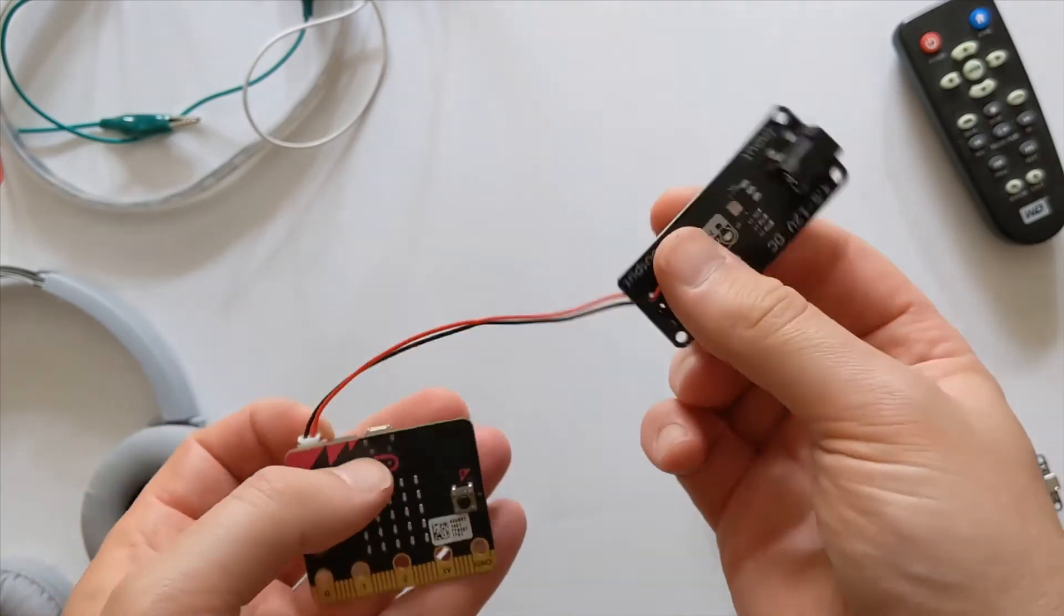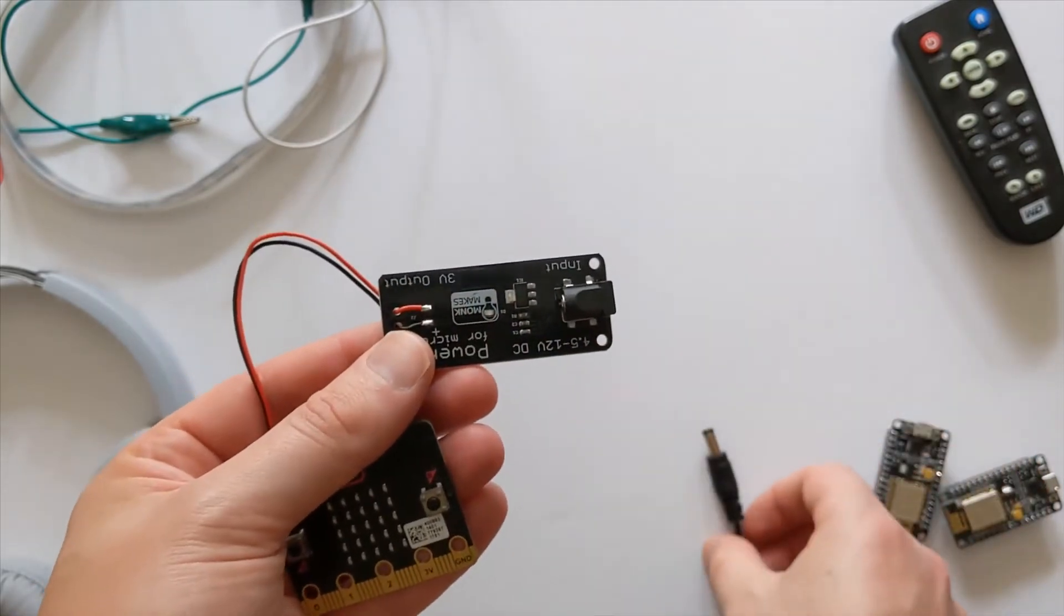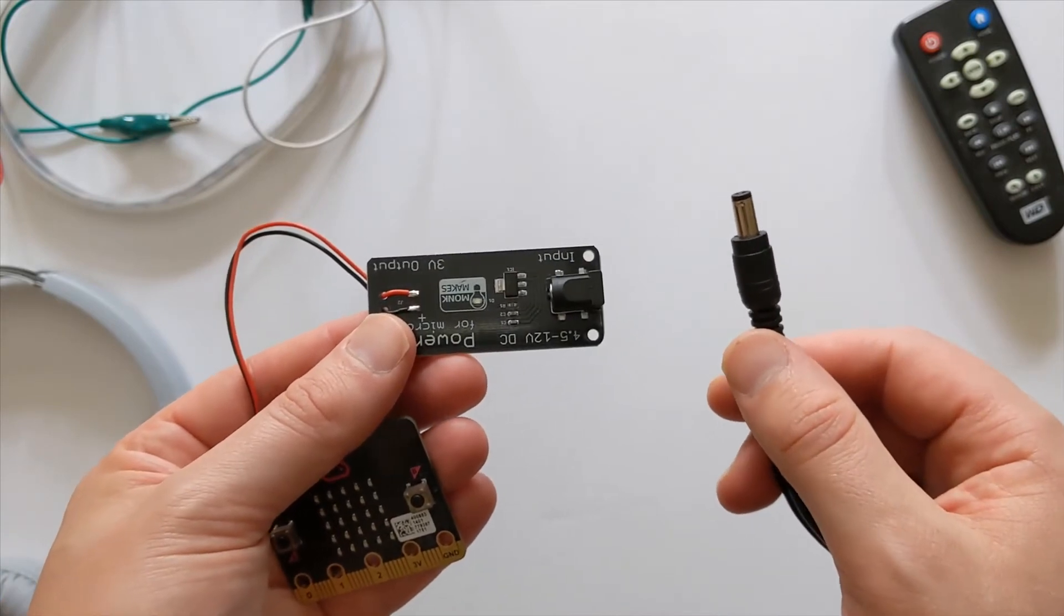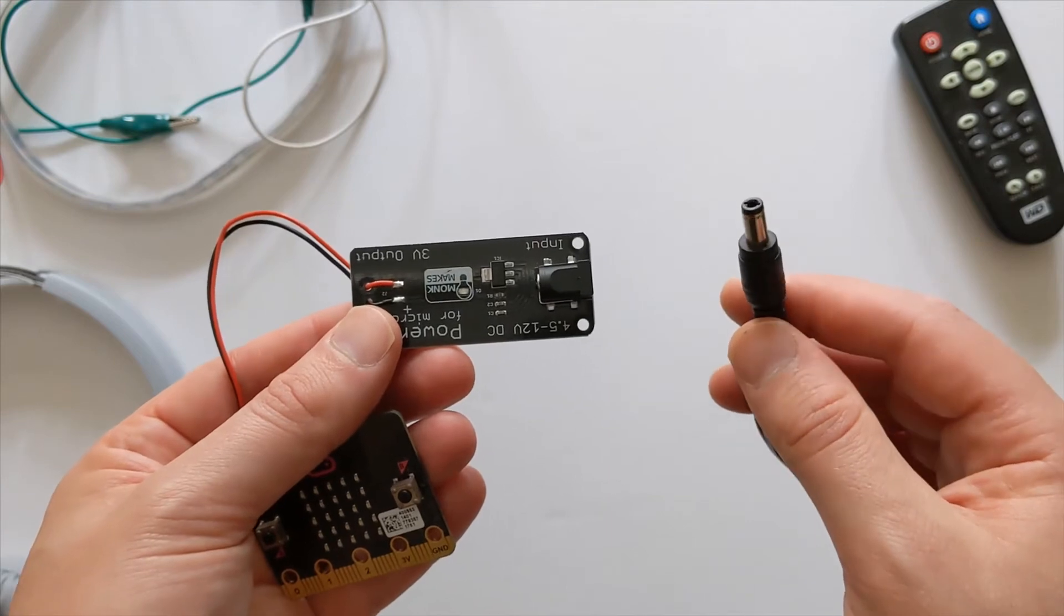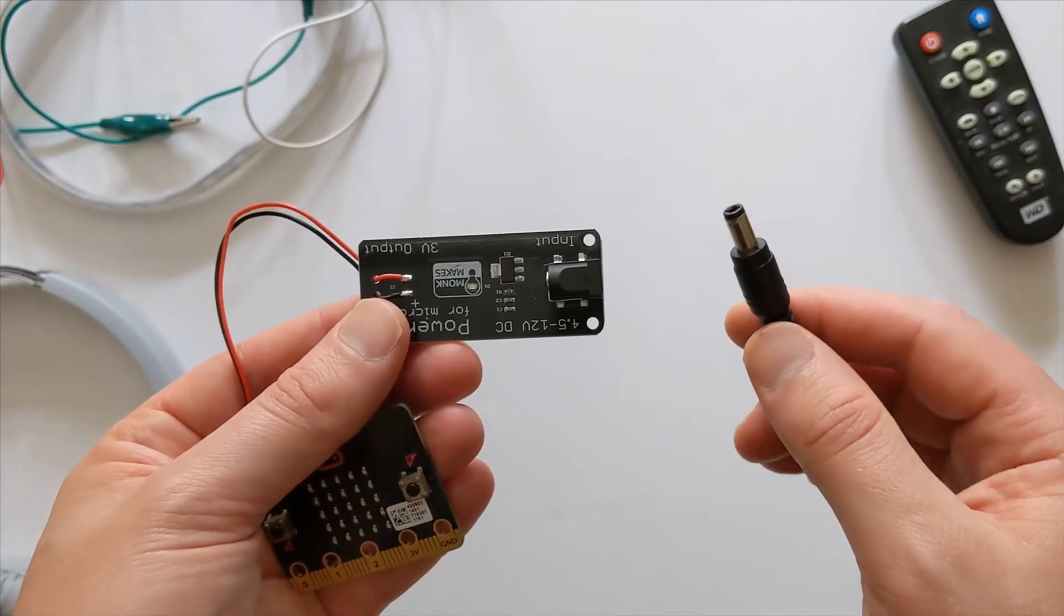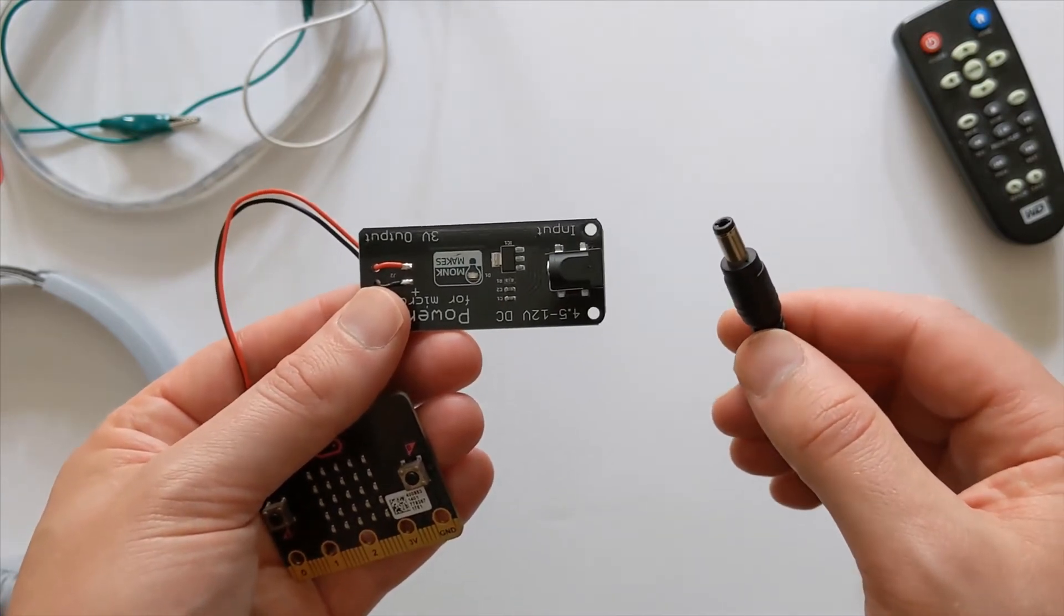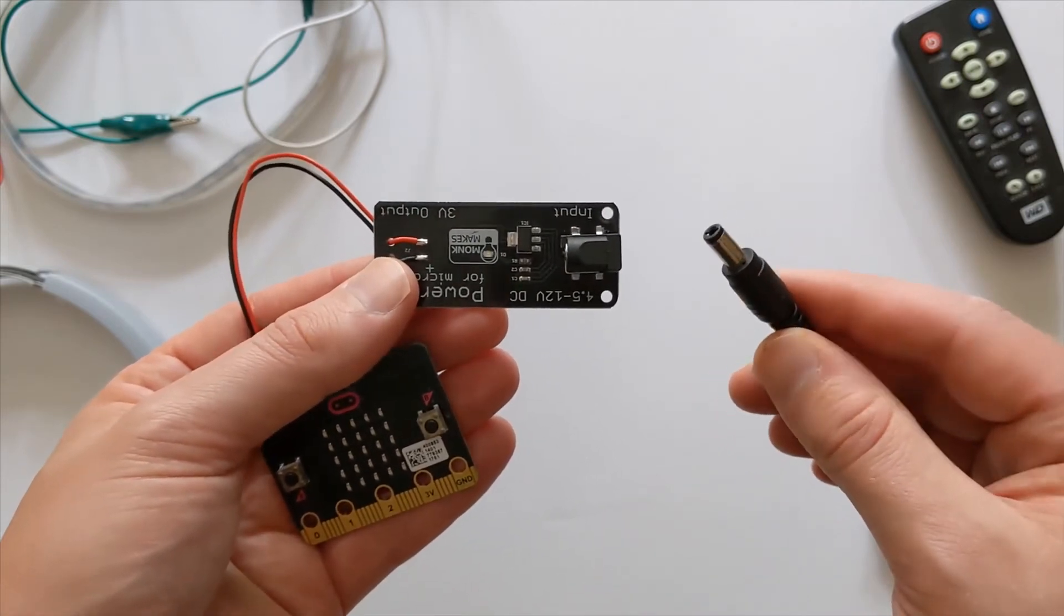And attach our barrel adapter into the device. So this is a 12 volt power connection that I have for powering neo pixels separately. This will regulate the power down to 3.3 volts and give a nice steady current to the micro:bit.